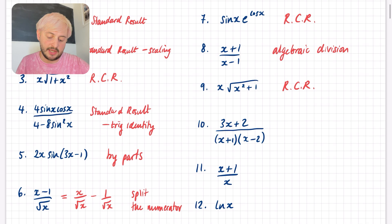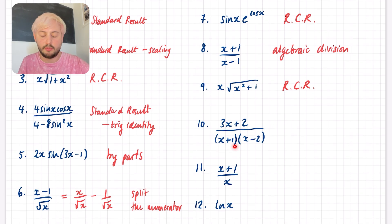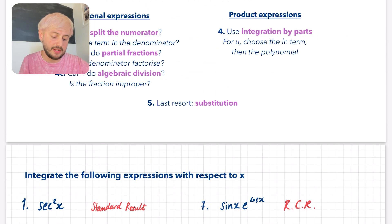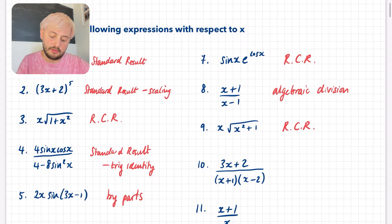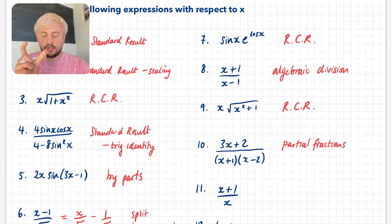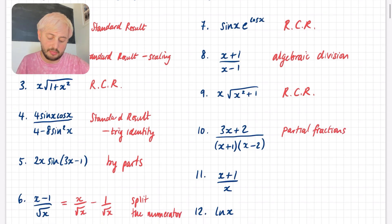Question 10: definitely not a standard result, definitely not reverse chain rule. There's a big clue in the denominator — the fact that it is factorised means I can do partial fractions, and then use some other techniques. So this is going to be a partial fractions question. After you've applied partial fractions, you can then integrate each of those individual parts separately.